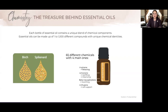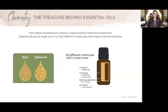Each bottle of essential oil contains a unique blend of chemistry, and the chemical structures will mainly be made up of carbon atoms. For example, the oil of birch is made up almost completely of a single compound — methyl salicylate, which is what aspirin is made of, though that is a synthetic version. Spikenard, on the other hand, contains hundreds of different compounds. Most oils fall somewhere between these two extremes.